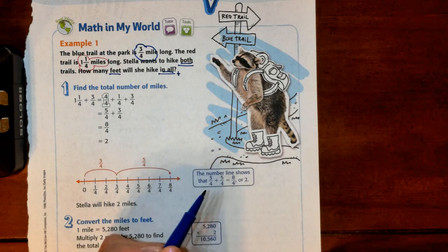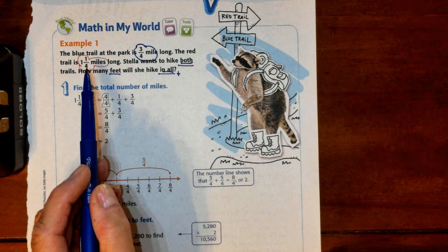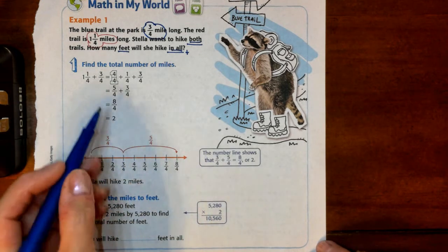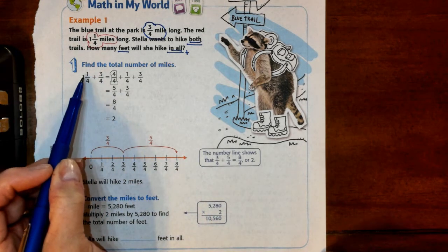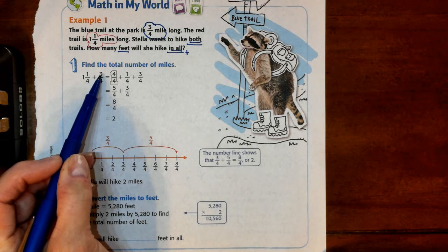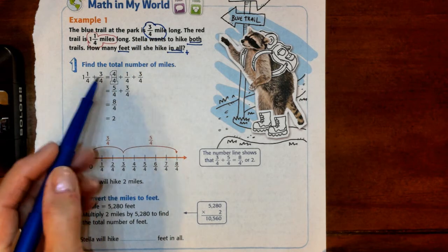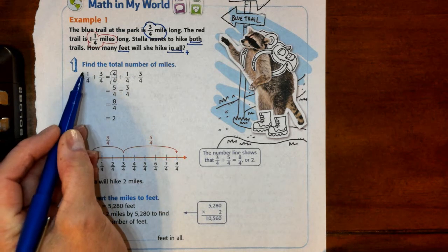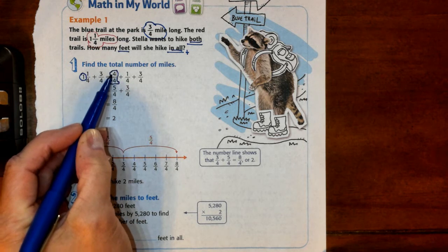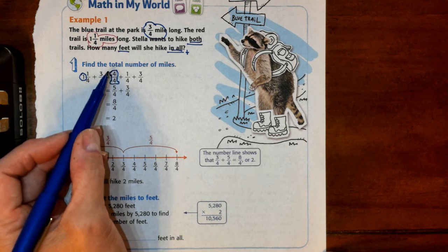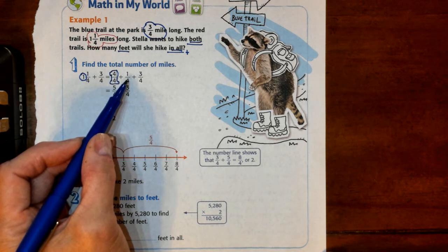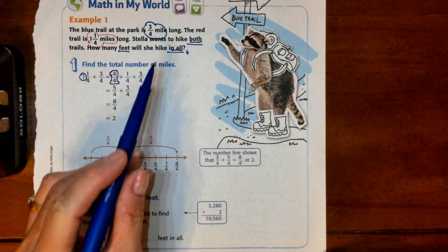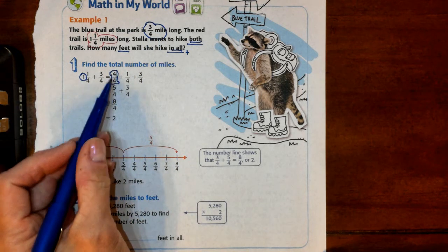So how many feet will she hike in all? We know that in all tells us we're going to be adding. We're going to be combining this one and a quarter miles with this three-quarter miles. What they do is they take our one and one-quarter plus our three-quarters and they said that it's equal to four-fourths. So this here is actually that whole, and they converted it back to its fraction. So four-fourths is this whole, and then plus the one-quarter which was attached to this whole, and then the three-quarters of the blue trail.